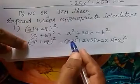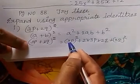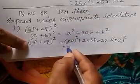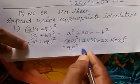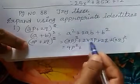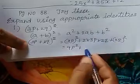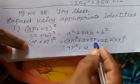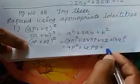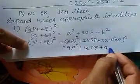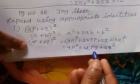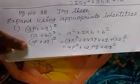3p whole squared means 3 squared is 9, so 9p squared. Then multiplying the constants: 2 × 3 × 2 = 12, so 12pq. And 2 squared is 4, so 4q squared. The answer is 9p² + 12pq + 4q².